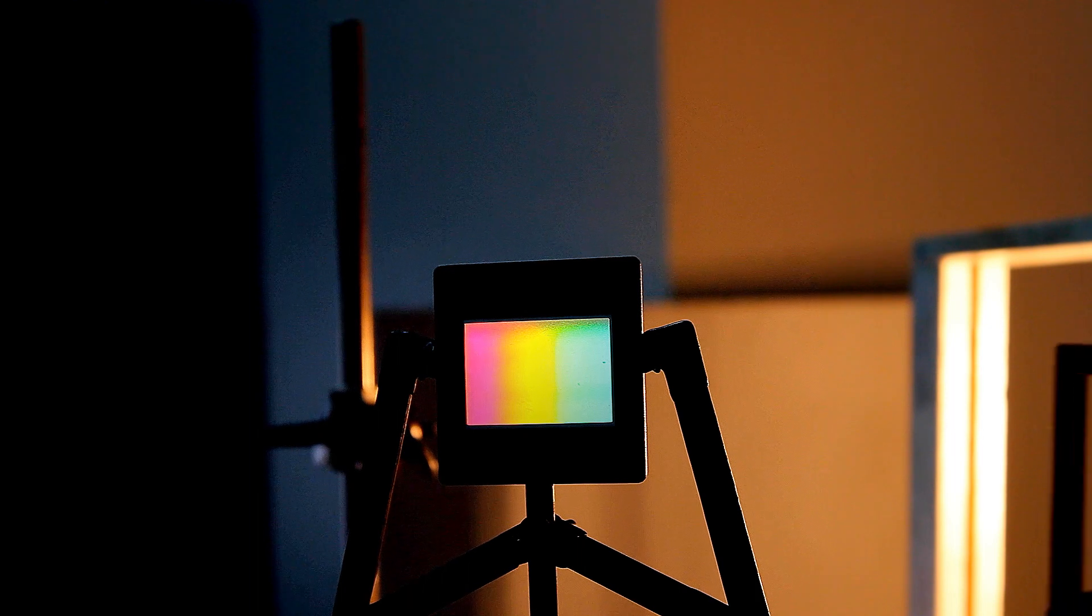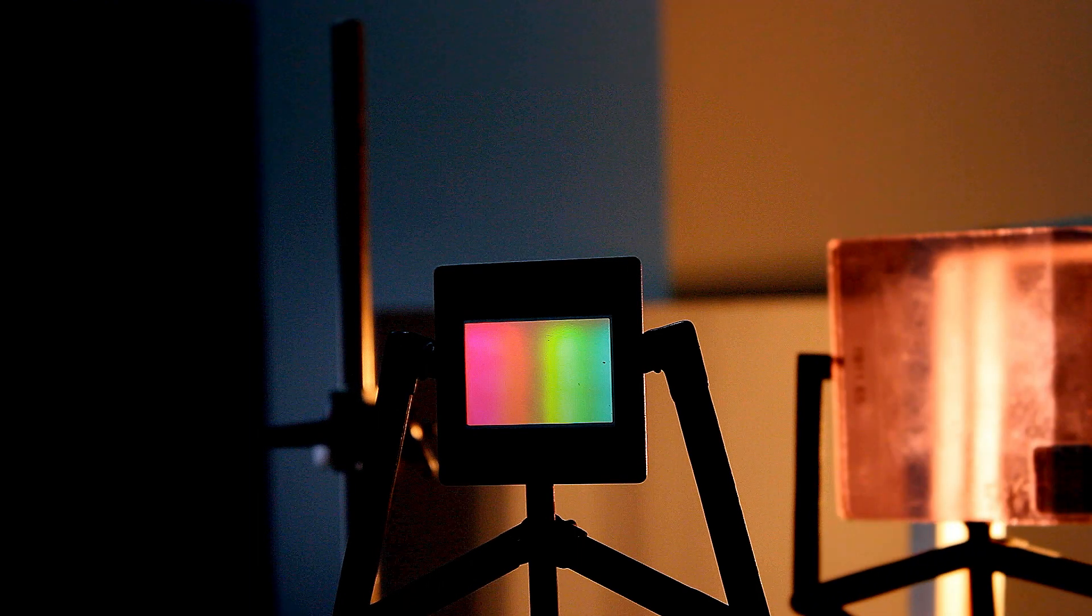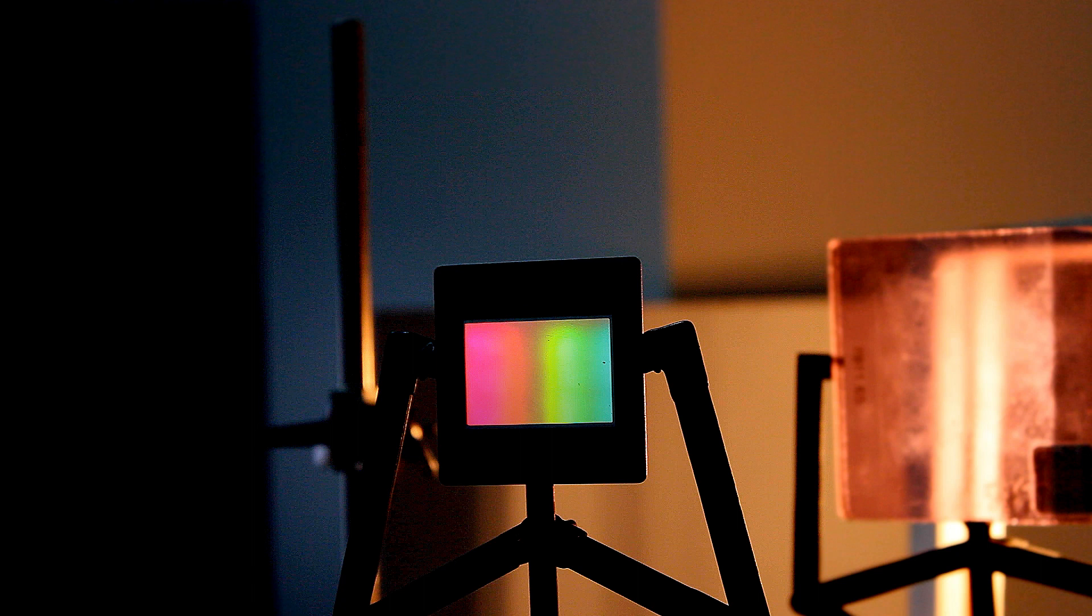We now look at the spectrum again, with the camera and the didymium inserted in the path. Note that there are substantial parts of the spectrum that have been replaced by dark bands. The didymium is absorbing and re-emitting those wavelengths in other directions than toward the camera. We see an absorption spectrum.